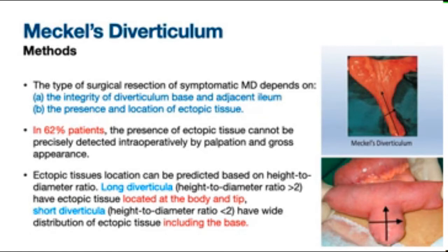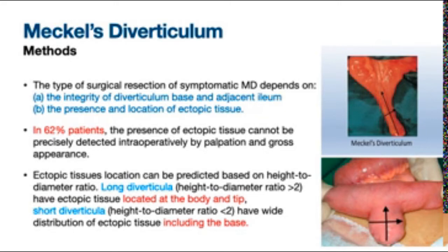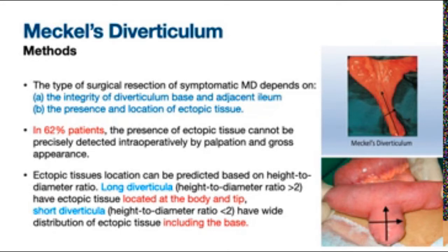Generally speaking, the type of surgical resection for symptomatic or complicated Meckel's diverticulum depends on two factors: firstly, the integrity of the diverticular base and the adjacent ileum; and secondly, the presence and location of ectopic tissue. In 62% of patients, the presence of ectopic tissue cannot be assessed intraoperatively by palpation or gross appearance. However, ectopic tissue can be predicted based on the height-to-diameter ratio.